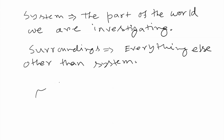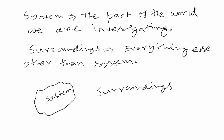The system is the part of the world we are investigating, and the surroundings is everything else. They are separated by a surface or boundary, which can also be movable.